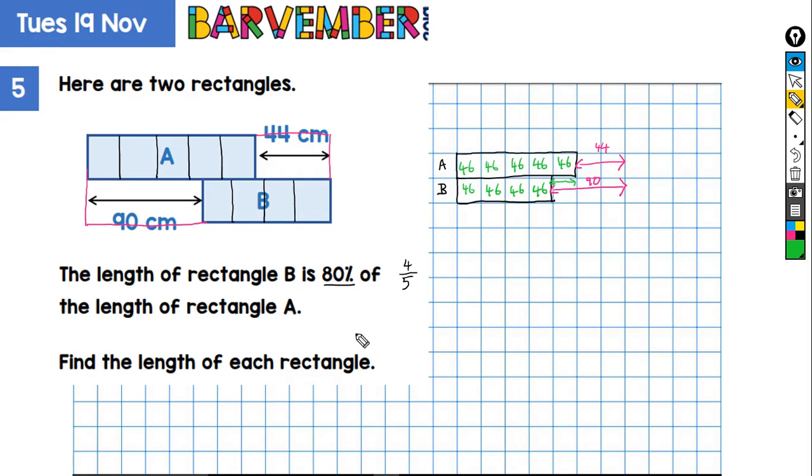So what am I asked then? The length of rectangle—find the length of each rectangle. That's what it was. So we've got one, two, three, four, five times 46. So five times 46—that's going to be 230 centimeters. This is rectangle A.